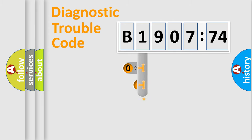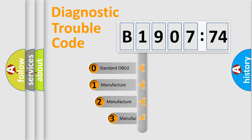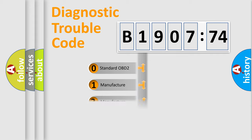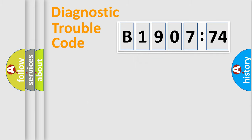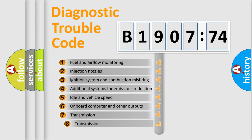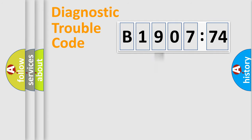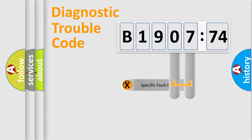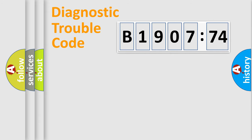This distribution is defined in the first character of the code. If the second character is expressed as zero, it is a standardized error. In the case of numbers 1, 2, 3, it is a more specific expression of the car-specific error. The third character specifies a subset of errors. The distribution shown is valid only for the standardized DTC code. Only the last two characters define the specific fault of the group.